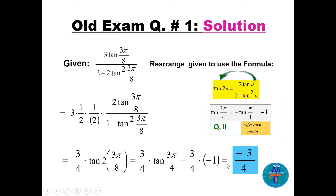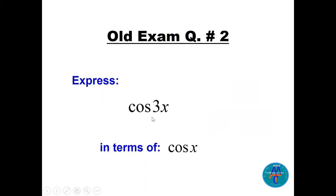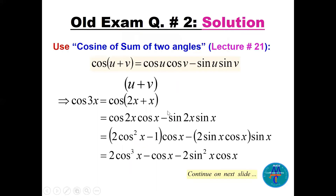Question number two: express cos(3x) in terms of cos(x). There is no direct formula for cos(3x), so we start by writing cos(3x) = cos(2x + x). Then we apply the sum formula from lecture 21: cos(u + v) = cos(u)cos(v) − sin(u)sin(v), applying it for u = 2x and v = x.